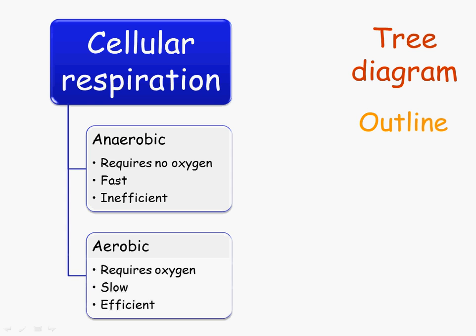Another style you might want to use is a tree diagram. This is a tree diagram that incorporates outlines. We have the overall idea of cellular respiration written first, then we draw branches of a tree, and each branch contains a mini outline that summarizes important parts. In this particular case we're looking at the anaerobic pathway and the aerobic pathway and comparing and contrasting them — a very simple idea, but by putting it on paper it helps solidify our understanding and the relationship between these two pathways.